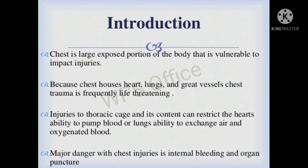Injuries to the thoracic cage and its contents can restrict the heart's ability to pump blood or the lungs' ability to exchange air or oxygenate blood. When we have any chest injury, the heart will not be able to pump properly, and the lungs will not be able to exchange gases. The major danger with chest injuries is internal bleeding and organ puncture — bleeding inside the organs and holes or punctures made inside the organs.